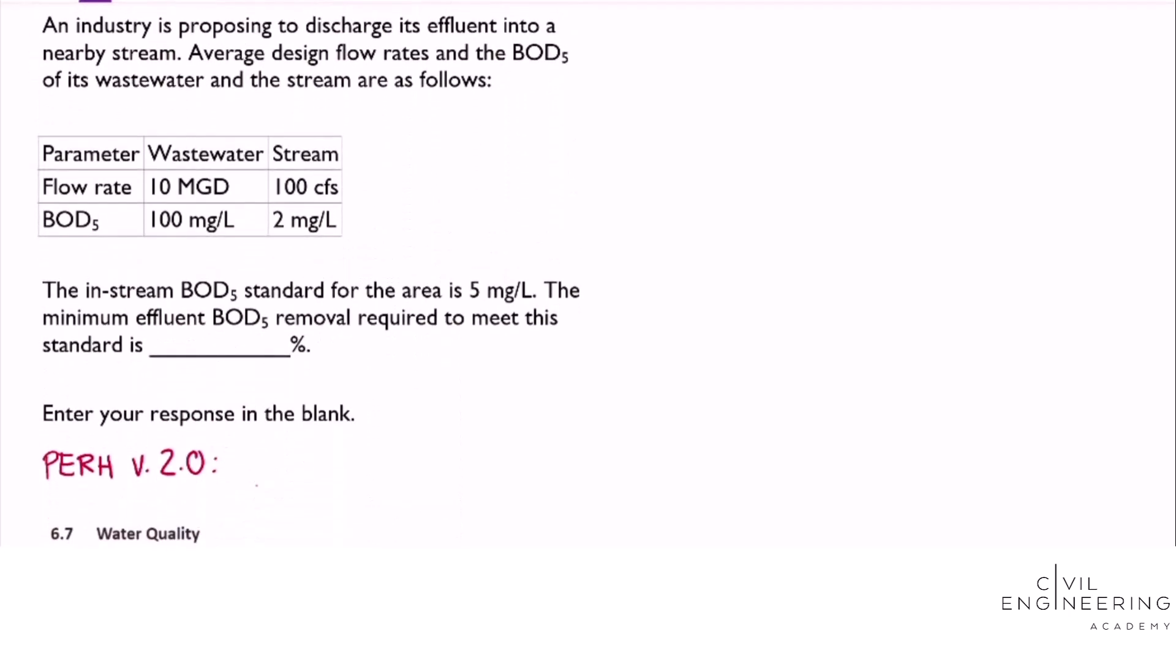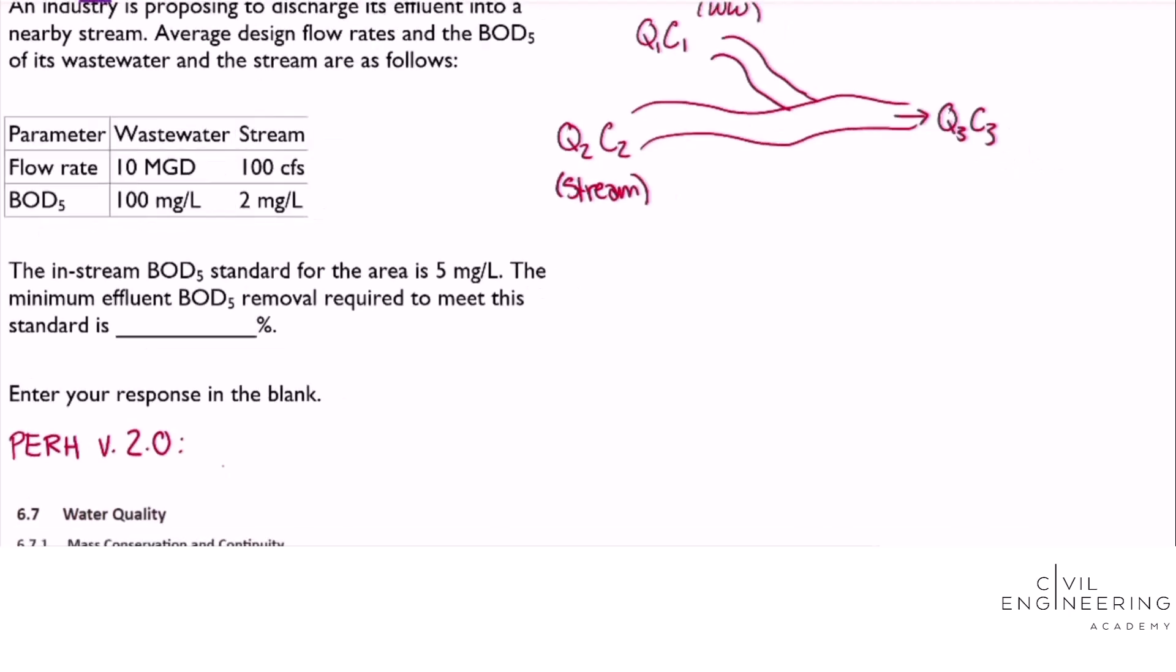We will have a stream with Q1C1 going into the stream - sorry this is the wastewater stream - and that's going into the stream. This effluent will be Q3C3, I did that kind of backwards, and then this will be Q2C2. Pretty much the wastewater is entering into the stream, this is the stream upstream of the mixing and then this would be the downstream.